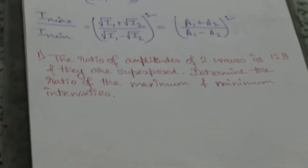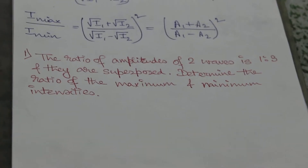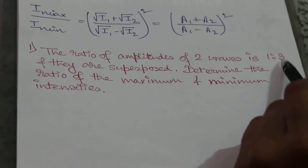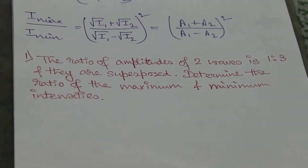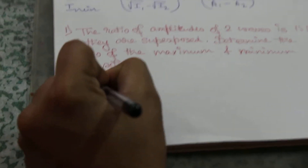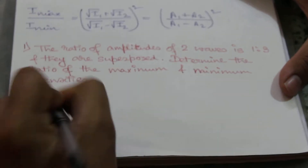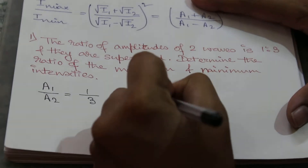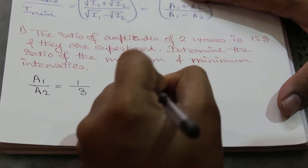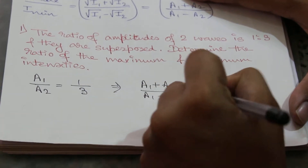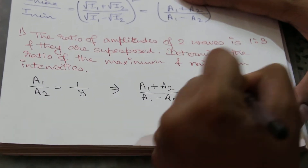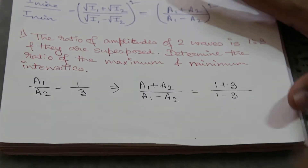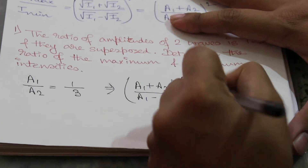Let's illustrate with an example. The ratio of amplitudes of two waves is 1:3 and they are superposed — determine the ratio of maximum to minimum intensities. Given a1/a2 = 1/3. Applying componendo-dividendo: (a1 + a2) / (a1 − a2) = (1 + 3) / (1 − 3).